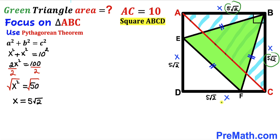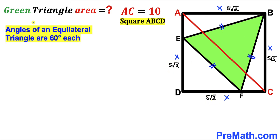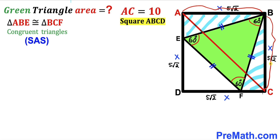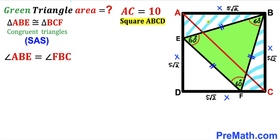Now let's recall the crucial fact: the angles of an equilateral triangle are 60 degrees each, so all angles of this equilateral triangle are 60 degrees. We can also observe that right triangle ABE and right triangle BCF are congruent triangles according to the side-angle-side congruency theorem, since these corresponding side lengths are equal.